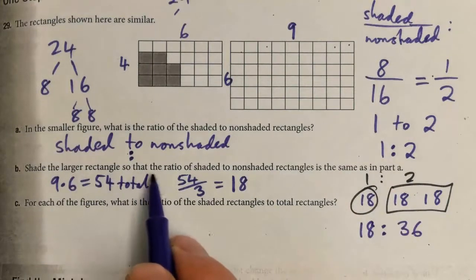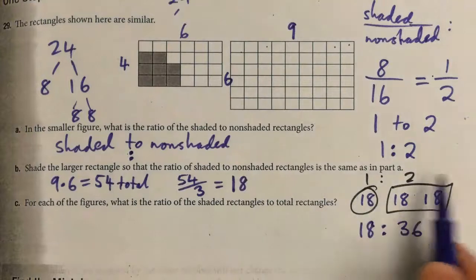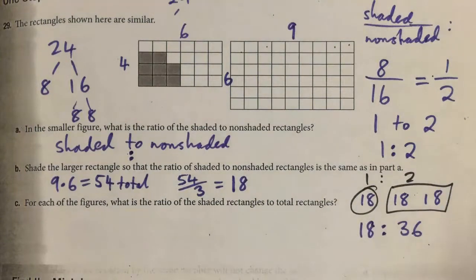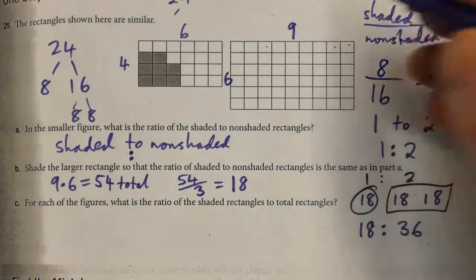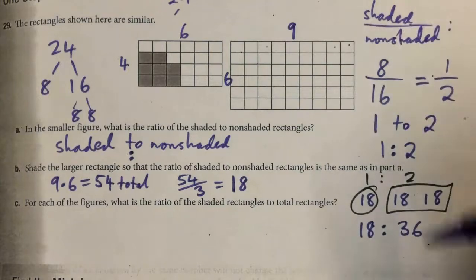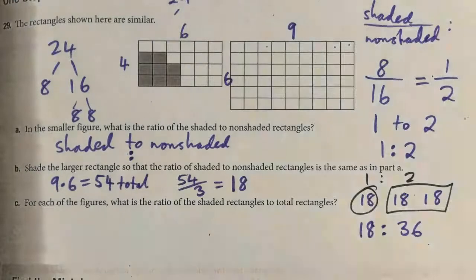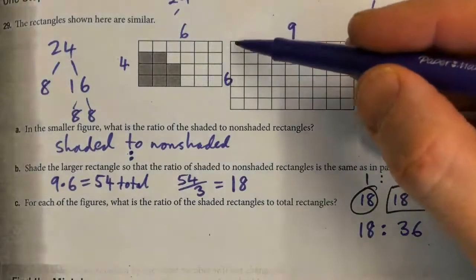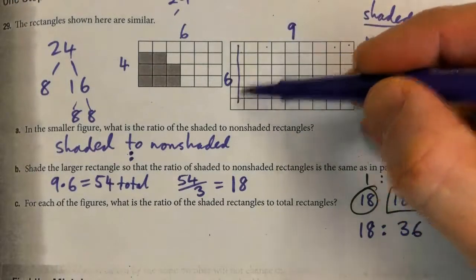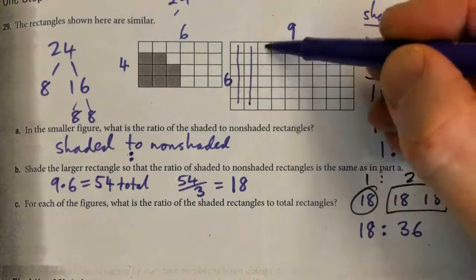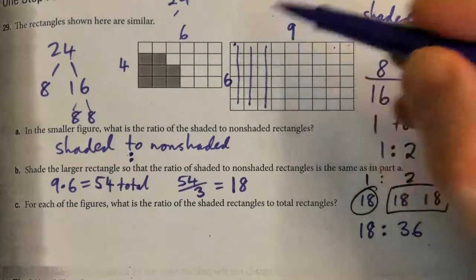Now we need to shade the larger rectangle with the same ratio as part a. We're going to shade 18 and not shade 36. We've got columns of 6 here, so that's 6, 12, 18. So there's our 18 shaded.